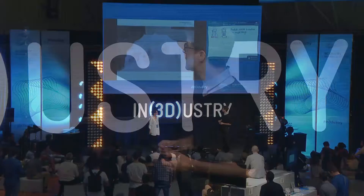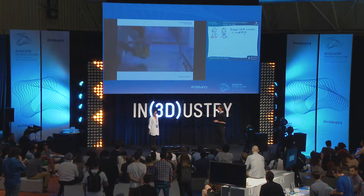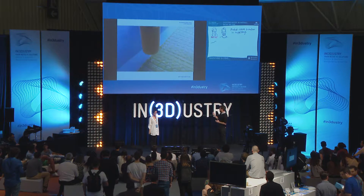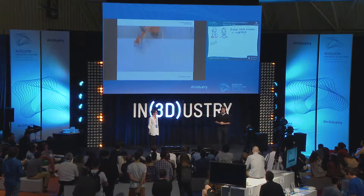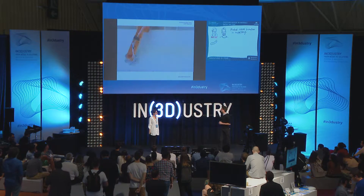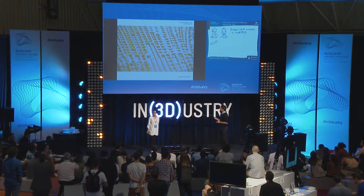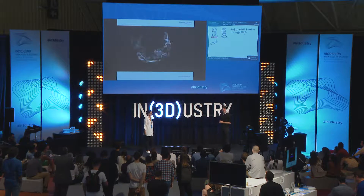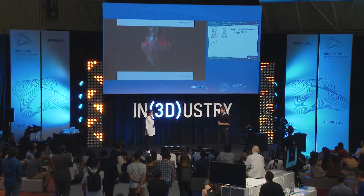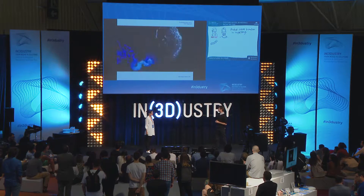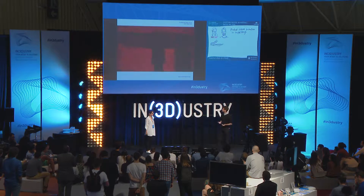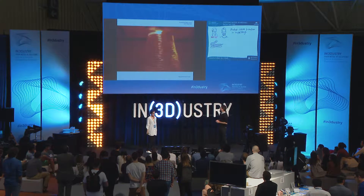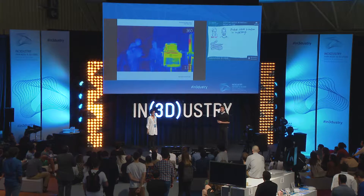Here you can see some of the projects where we have used digital manufacturing technologies: the Silk Pavilion, the water-based platform we will talk about more later, augmented wearables using 3D-printed technology and biology itself, and glass transparent digital printing.